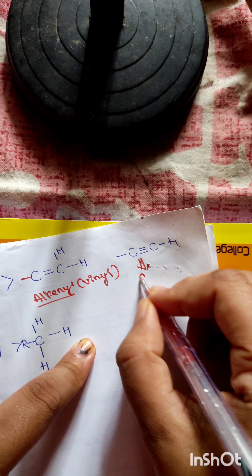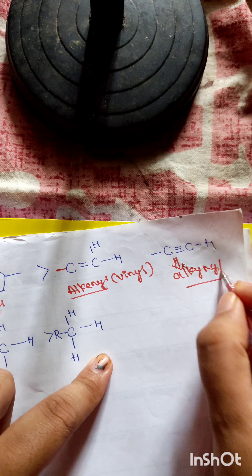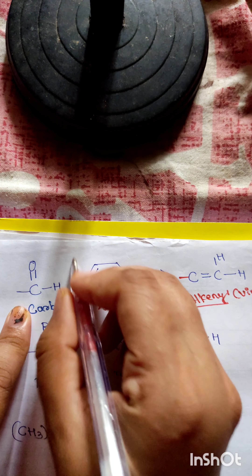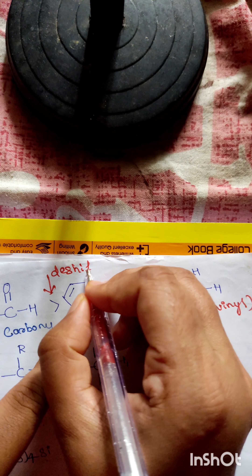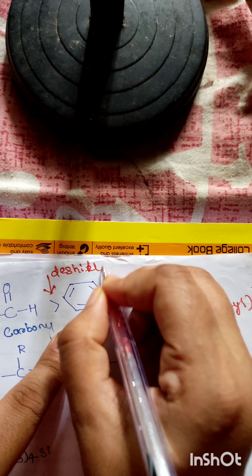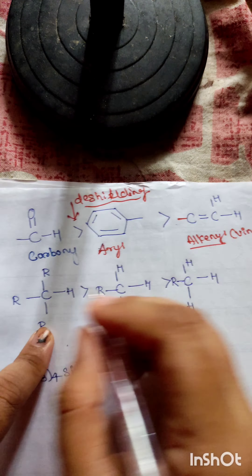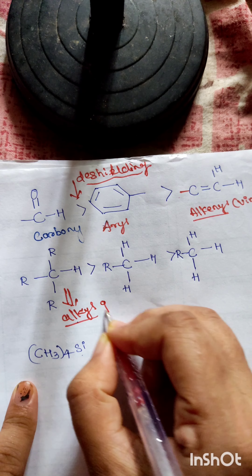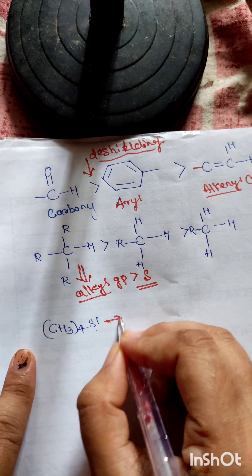In terms of increasing deshielding: alkyl groups with carbon-carbon triple bonds show very low deshielding compared to carbonyl, aryl, or vinyl groups. The increasing order of chemical shift range for deshielded protons is: alkyl groups, then alkynes, then vinyl groups, then aryl groups, then carbonyl groups.